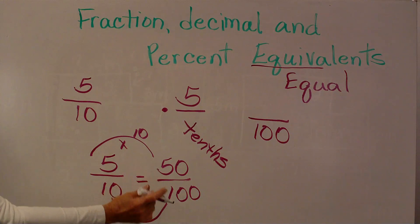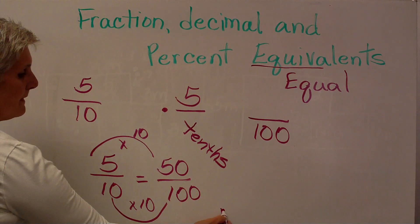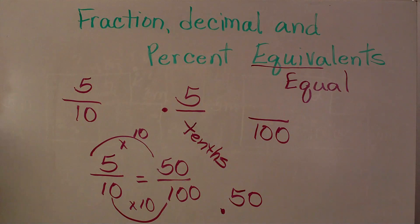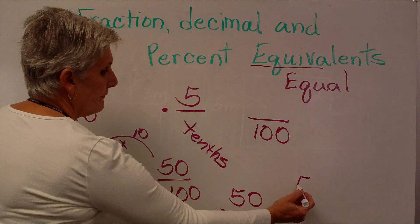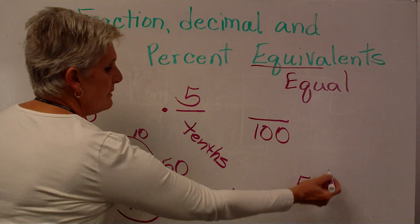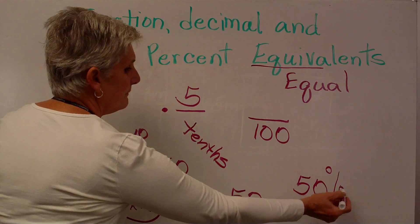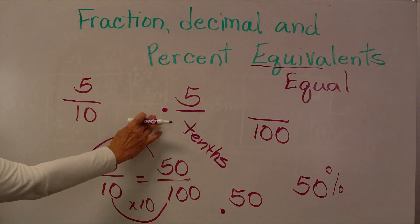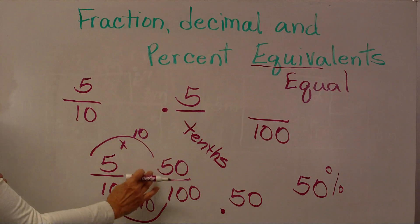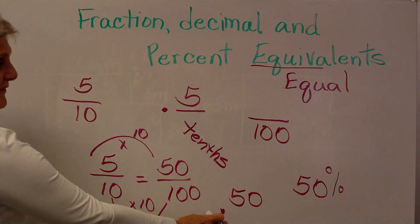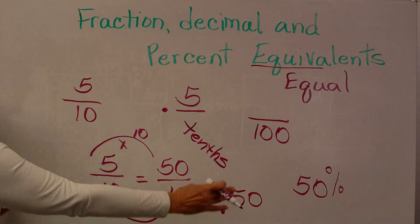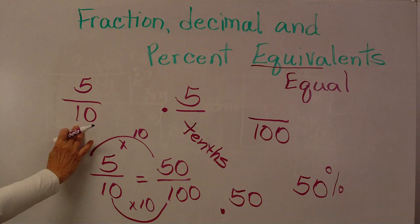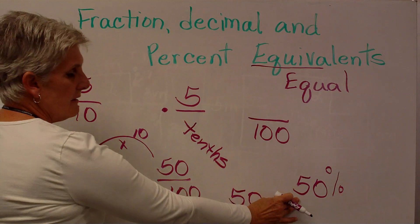Fifty hundredths as a decimal is a decimal point with a 5 and a 0 after it. Fifty percent is 50 with my percent sign. All three of these are equal to 5 tenths: 5 tenths as a decimal, 50 over 100 as a fraction, 50 hundredths as a decimal, and 50 percent. That's changing a denominator of 10 to a percent of 50 percent.